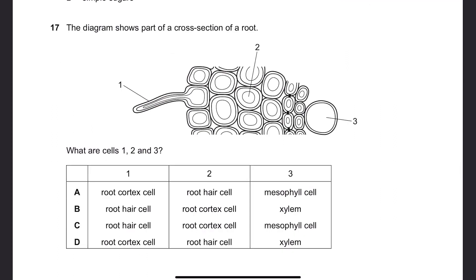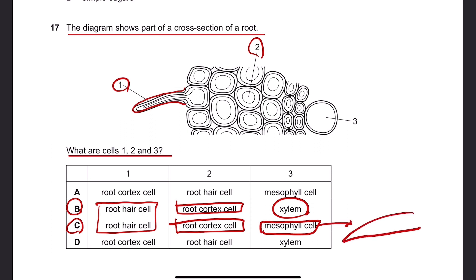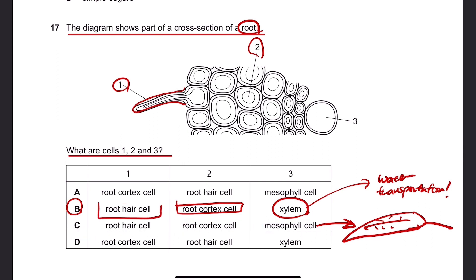Number 17. The diagram shows part of a cross section of a root. What are cells 1, 2, and 3? Cell 1 is the root hair cell, which has a hair-like extension to increase surface area. Cell 2 is the root cortex cell. Cell 3 is xylem, which transports water. Mesophyll cells are only found in leaves. Hence the answer is B.